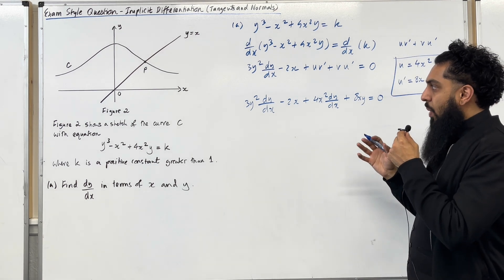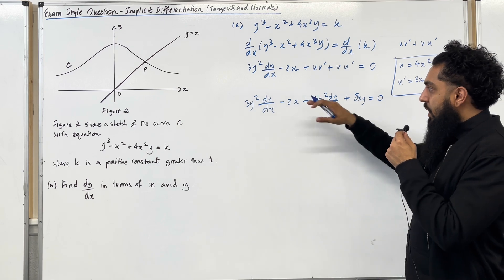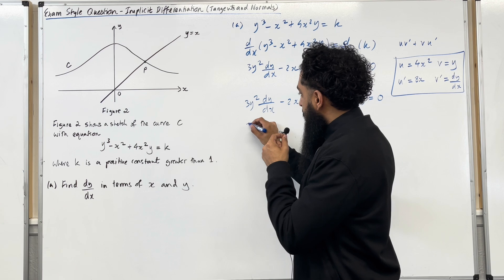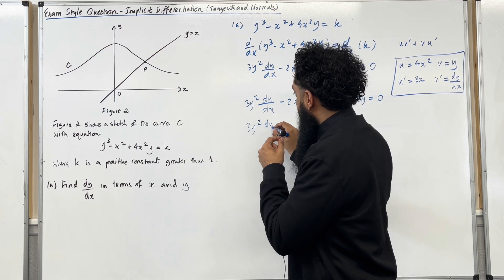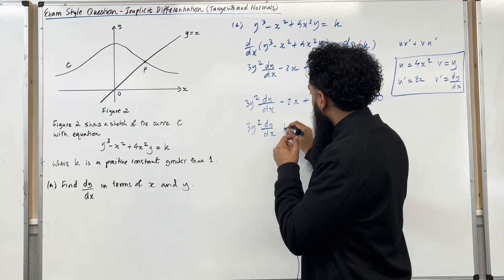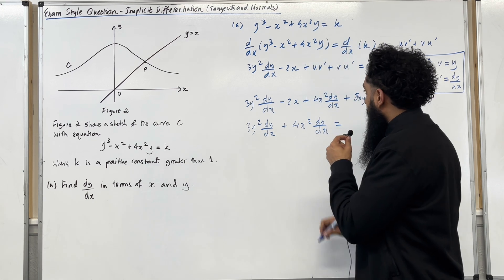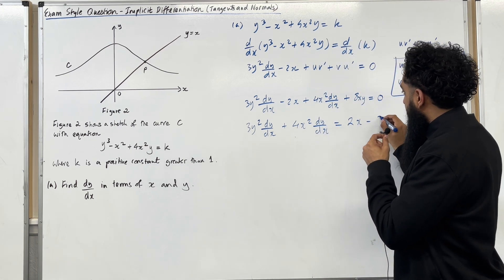I'm going to keep all the dy over dx's on one side. And all the additional terms I'm going to take it to the right hand side. So I've got 3y squared dy over dx plus 4x squared dy over dx equal 2x minus 8xy.